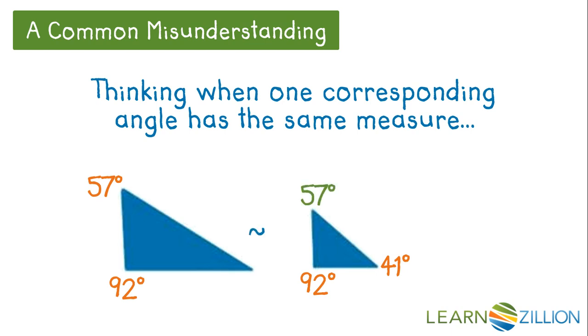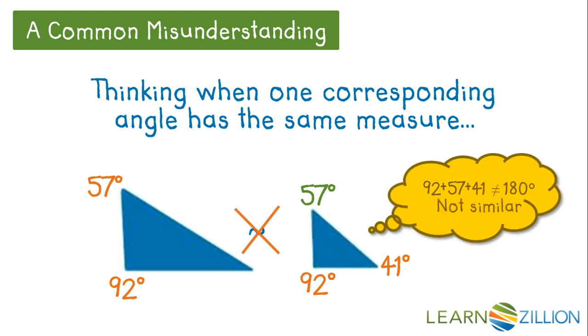If they were to be similar, the third angle of the smaller triangle must be 57 degrees. But in this case, 92 degrees plus 57 degrees plus 41 degrees is not 180 degrees, so therefore the triangles are not similar.